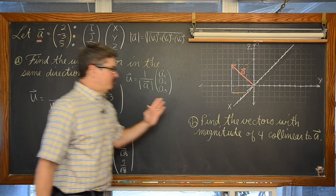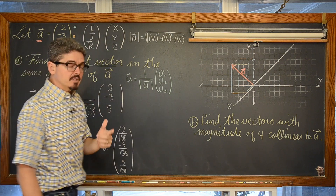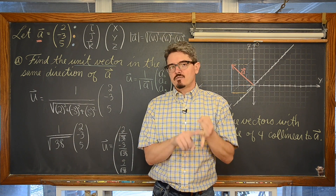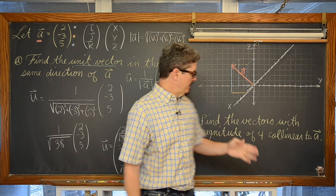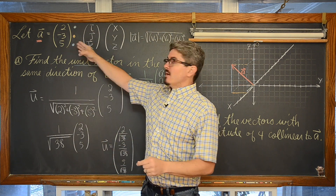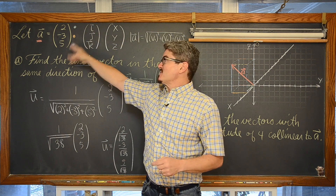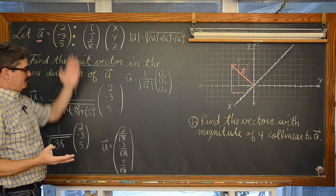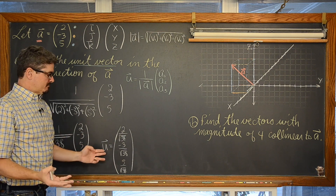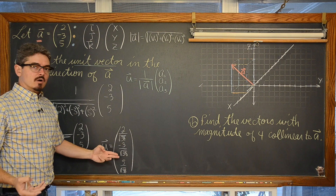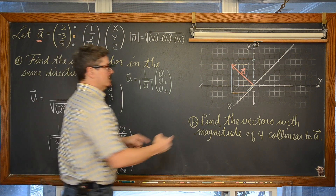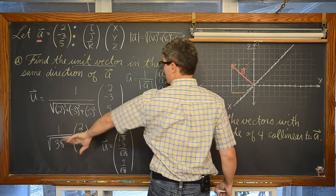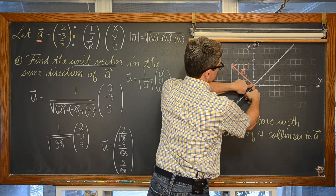Find the vectors with a magnitude of 4 that are collinear to A. Now I said collinear, not just in the same direction. From a previous lesson, we can have both a positive and a negative scalar multiple, which means our collinear vectors can either go in the same direction as vector A with a positive scalar multiple, or in the opposite direction with a negative scalar multiple. We have standardized vector A down to a length of 1 with our unit vector u, so now all I have to do is multiply by 4.